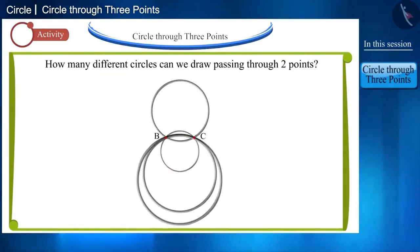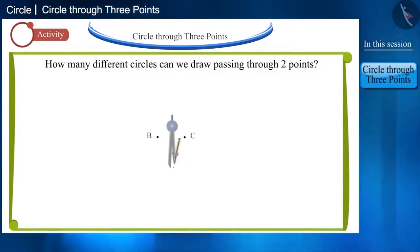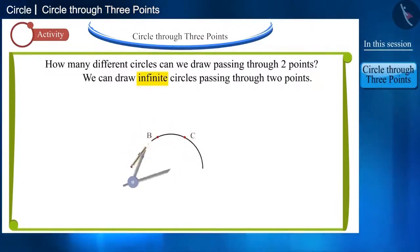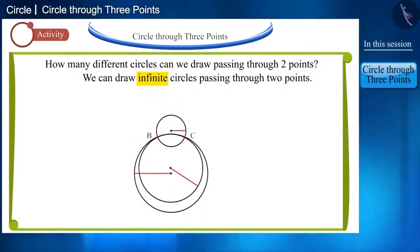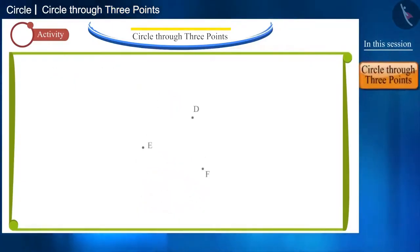Thus, you can place the rings in many ways. That is, we can draw infinite circles passing through two points with the help of a compass. We draw the first circle, second circle, and this one is the third circle. We can draw more circles by taking different radii. Let's move forward and look at the number of circles that can pass through three points.